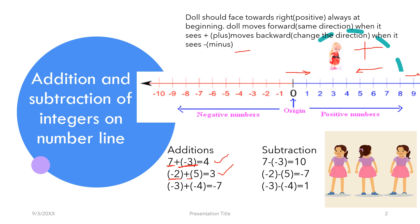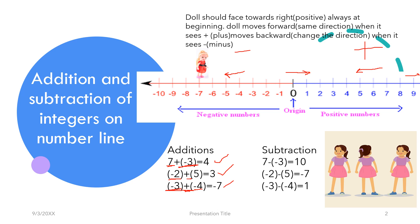Now the third problem: -3 + (-4). The doll first sees minus 3, so the doll should stay at minus 3. Then the doll sees the plus value, so she thinks she has to move towards the right. But again there is minus, so the doll again changes direction and moves towards the left — 4 times. So the result is minus 7.